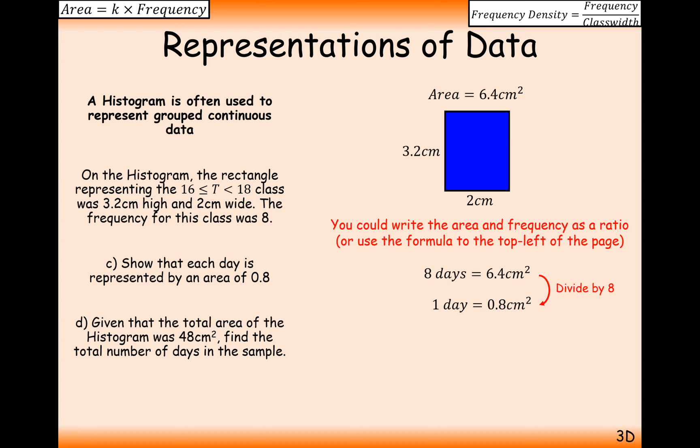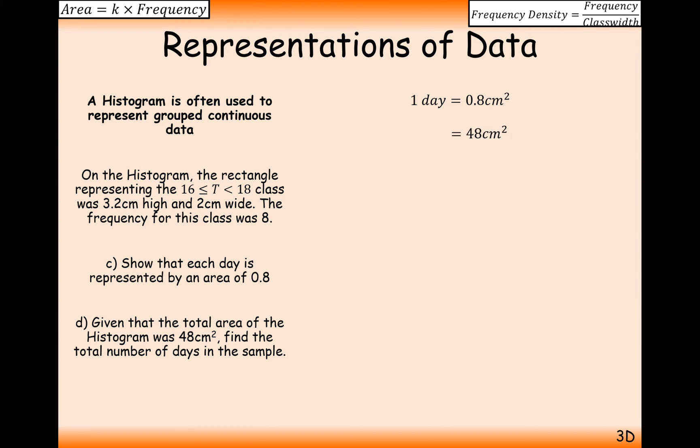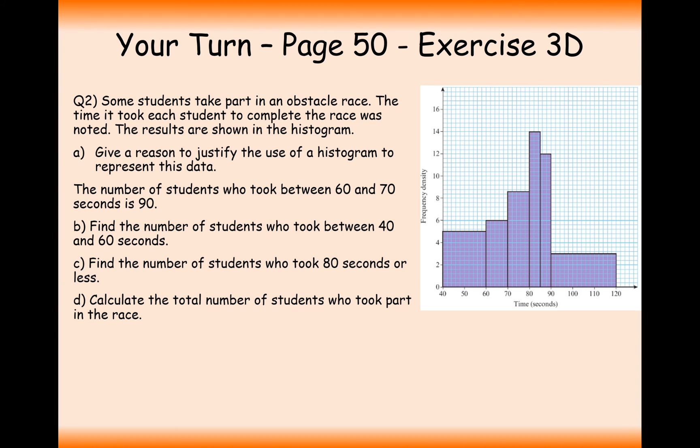Given the total area of the histogram was 48 centimeters squared, give the total number of days in the sample. So what we'll do here is if 1 day equals 0.8 centimeters squared, how many would 48 centimeters squared be? Well, what we need to do is multiply by 60 here because 48 divided by 0.8 is 60. So we'll get 60 days here.